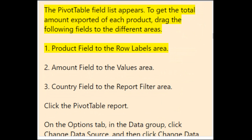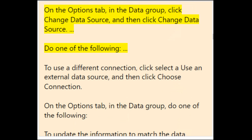To get the total amount exported of each product, drag the following fields to different areas: Product field to the Row Labels area, Amount field to the Values area, and Country field to the Report Filter area. To change the data source, click the pivot table report, then on the Options tab in the Data group, click Change Data Source. To use a different connection, click 'Select an external data source' then click Choose Connection.